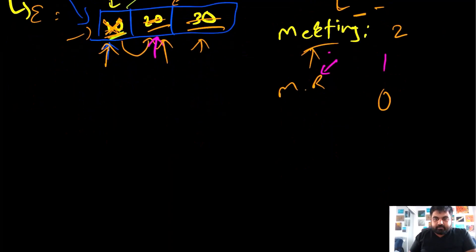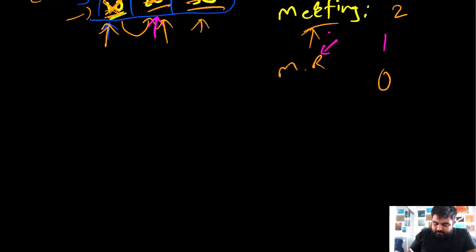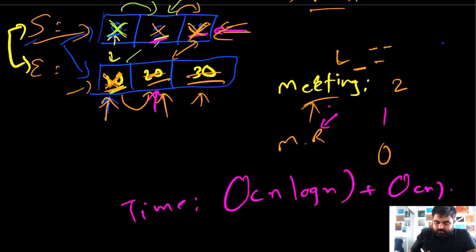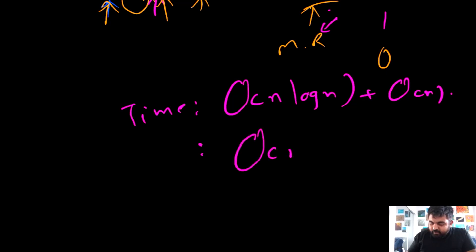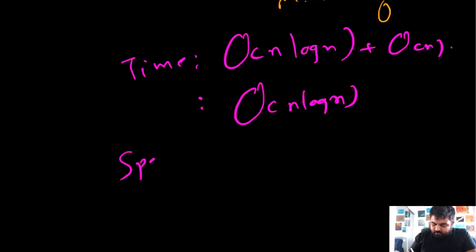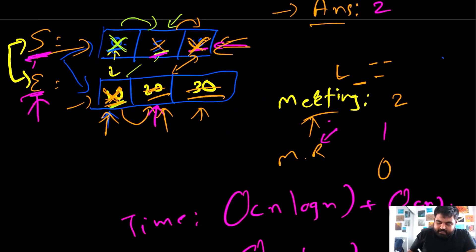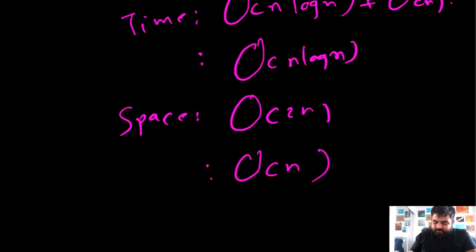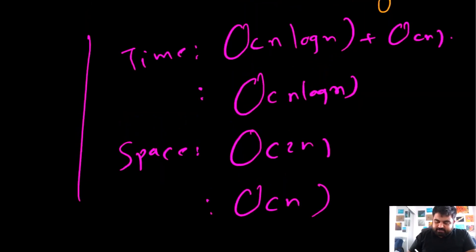The time complexity is O(N log N) for sorting plus O(N) for iterating over the start and end arrays, which simplifies to O(N log N) overall. The space complexity is O(2N) for storing the two arrays of N values each, which simplifies to O(N). This is the optimal time and space complexity for this solution.